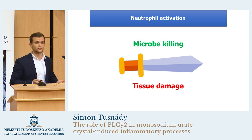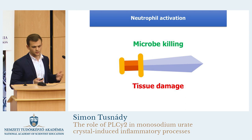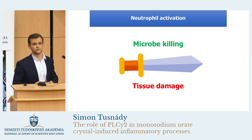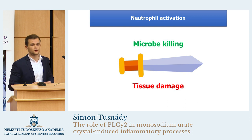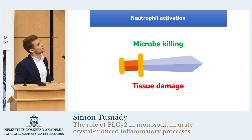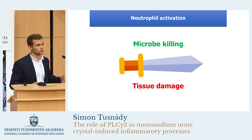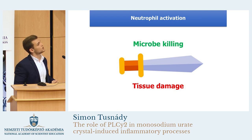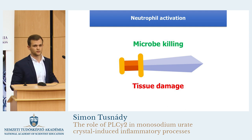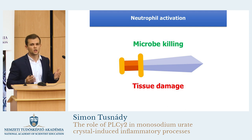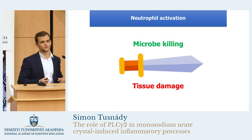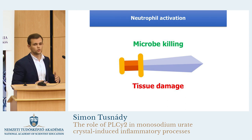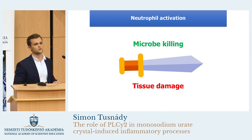The activation of the neutrophils at first sight is very beneficial for our body. The microbe-killing activity is essential during fighting infections. However, the activation of the neutrophils is like a double-edged sword. Their inadequate activation can easily lead to inflammation and tissue damage. For example, in the case of gouty arthritis, the main reason of the gout attacks is the improper activation of the neutrophils. Therefore, if we could inhibit the activation of the neutrophils, we could treat the gout attacks. To reach this goal, first we should understand the molecular mechanism of the activation of the neutrophils.